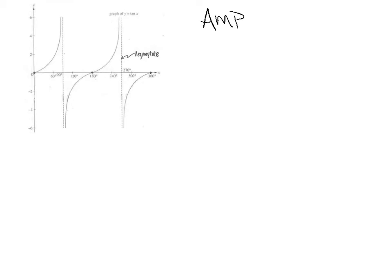Now that we've seen the picture of tangent, let me summarize key properties. The amplitude is a fuzzy topic because this graph shoots straight up toward the sky — it doesn't have a finite height. So we say either the amplitude is infinity, or it doesn't exist. On a multiple choice exam, if you see one or the other, that's the right answer.